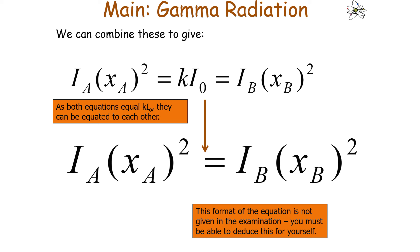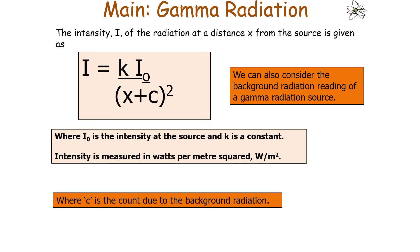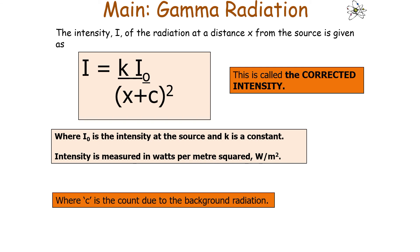We also hadn't previously considered background radiation. You can account for it by including C, the count due to background radiation, in your equation. The corrected equation becomes I = KI₀/(X + C)², and we call this the corrected intensity because we've now accounted for background radiation.